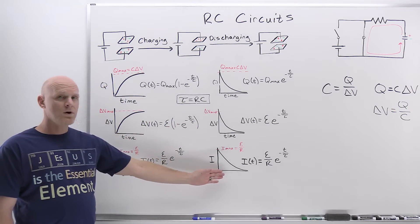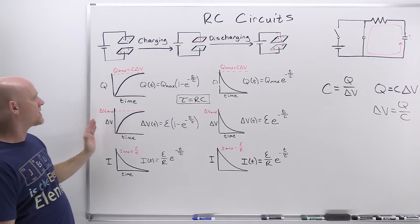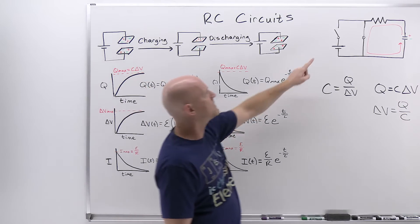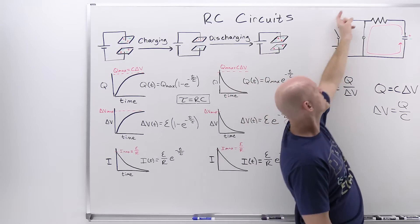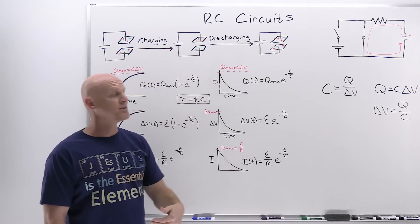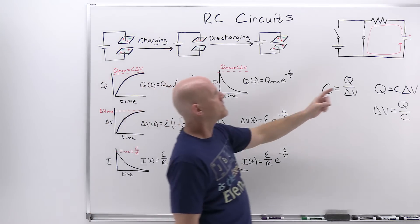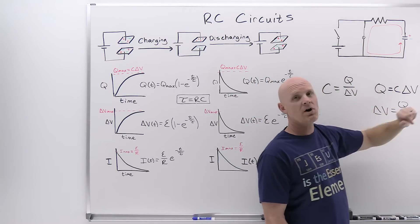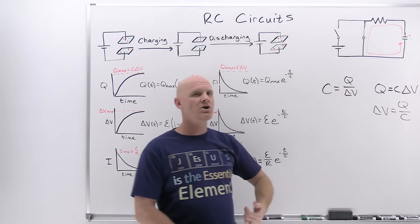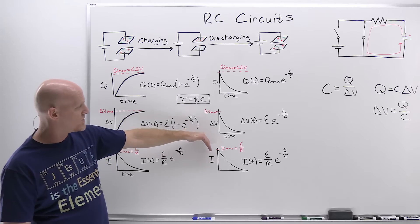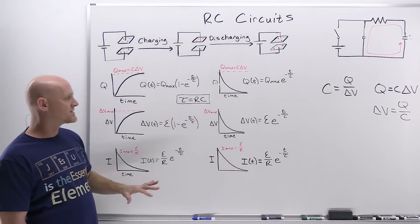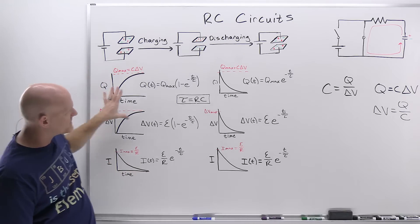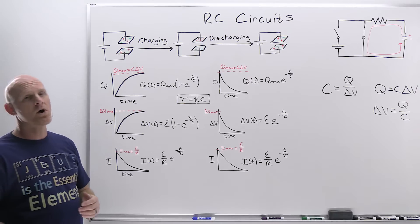Notice that the current equation looks exactly the same during both charging and discharging. We see opposite-looking graphs for charge and potential difference — going up during charging, going down during discharging. But in both cases, current starts at a maximum and goes to zero. During charging, current flows to charge the plates but decreases as more charge builds up. During discharging, the greatest impetus for charge to flow is when at max charge, but as plates return to neutral there's no propensity for current to flow, and it stops completely. So current flow starts at a maximum and goes to zero in both cases.